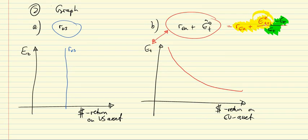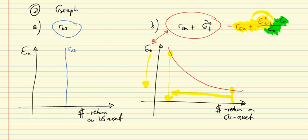This crucially rests on the assumption of fixed expectations. A more appreciated dollar today (lower E_t) implies higher future depreciation, so at a point with a fairly appreciated dollar the future depreciation implies a higher return. With a fairly depreciated dollar exchange rate you get no additional compensation from future depreciation, so the dollar return on the EU asset is lower. This gives the EU return curve a downward slope.